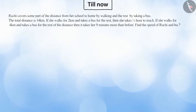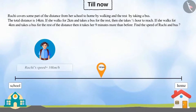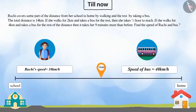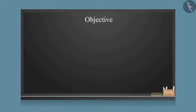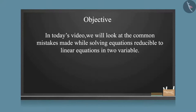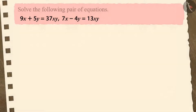Welcome to this video. In the previous video we looked at some examples of equations which can be expressed in the form of linear equations in two variables. Now we will look at the common mistakes made while solving questions based on this. Solve the given pair of equations — pause the video and match your answer.